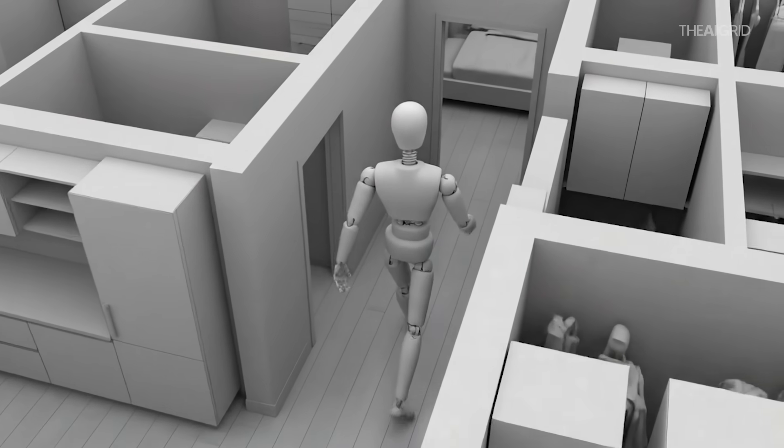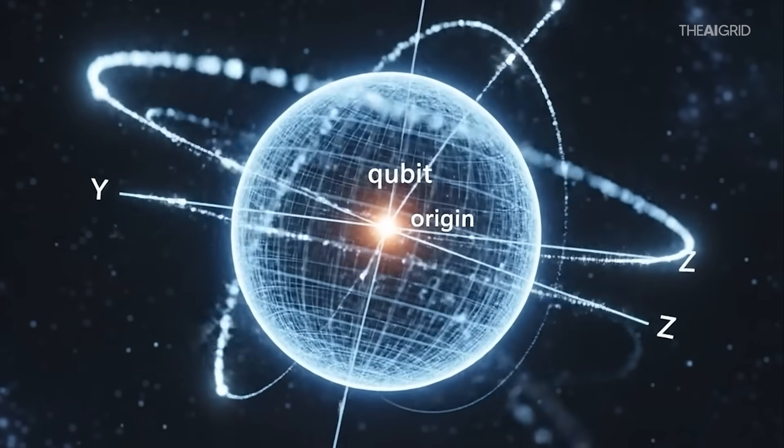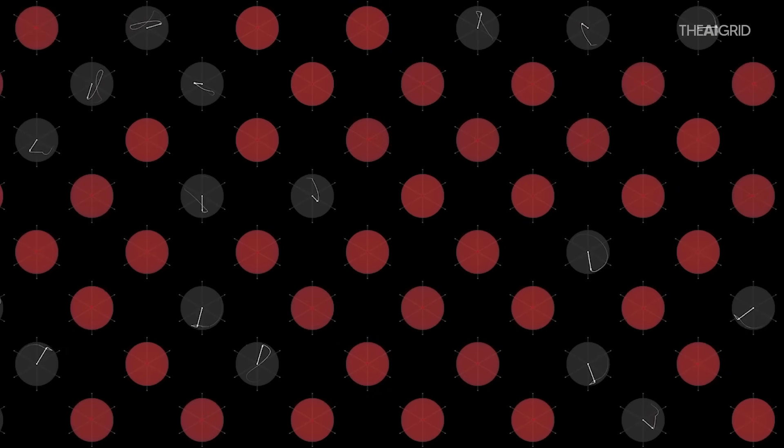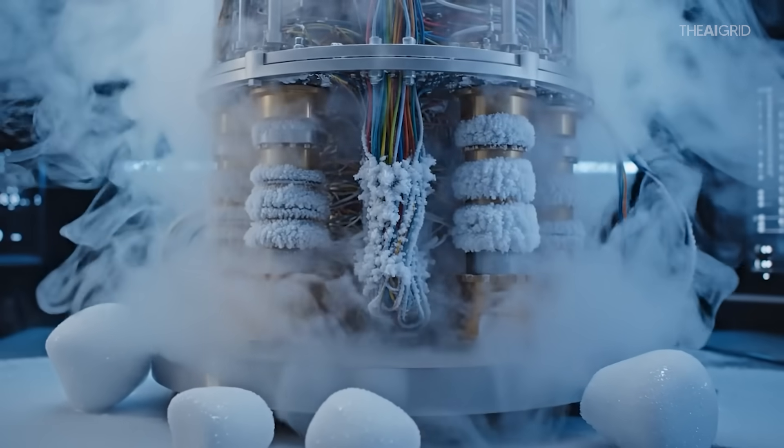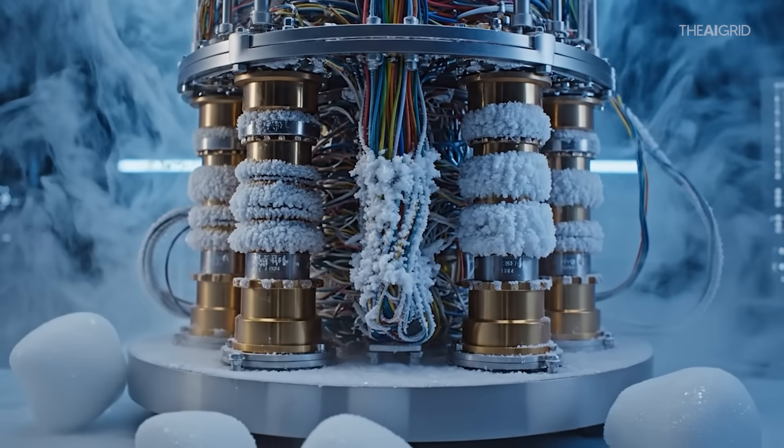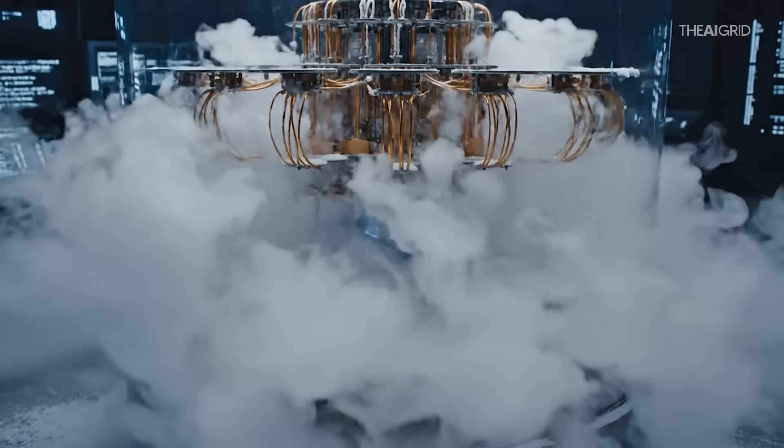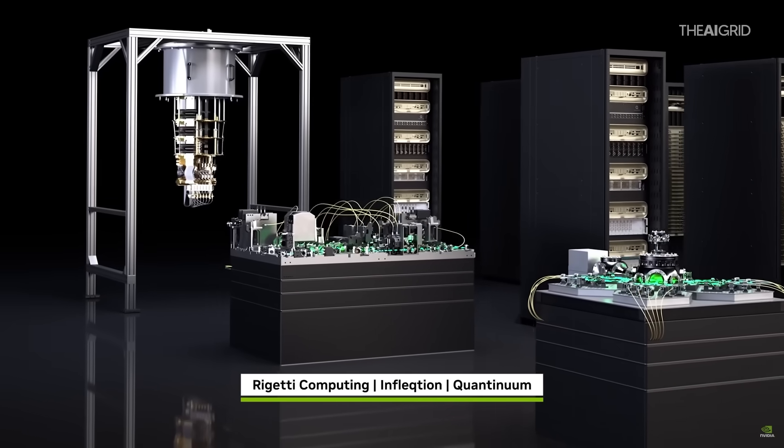But here's the catch, and there's always a catch, right? Qubits are incredibly fragile, like really fragile. They're so sensitive that if you look at them wrong, they basically fall apart. They need to be kept at temperatures colder than outer space. We're talking negative 450 degrees Fahrenheit. That's colder than the vacuum of space between stars. One little vibration, one tiny bit of heat, and boom, your calculations are garbage. And this is where Nvidia comes in with their new thing, NVQ link, but we'll get to that in a minute.